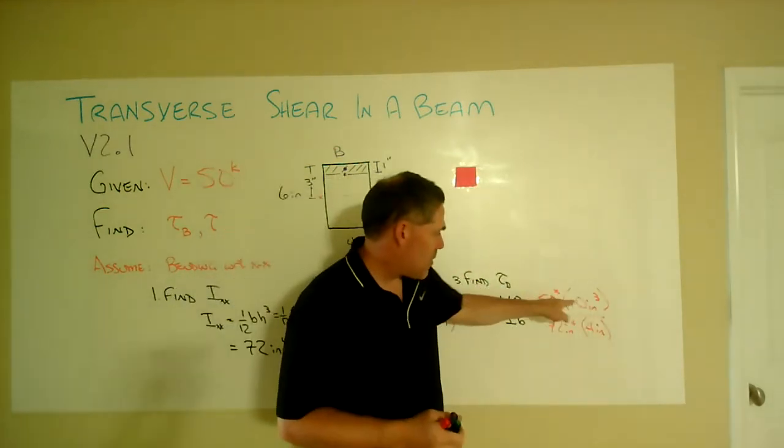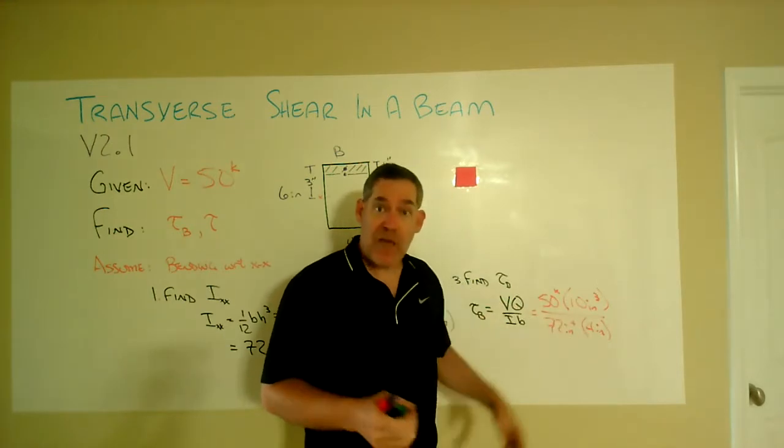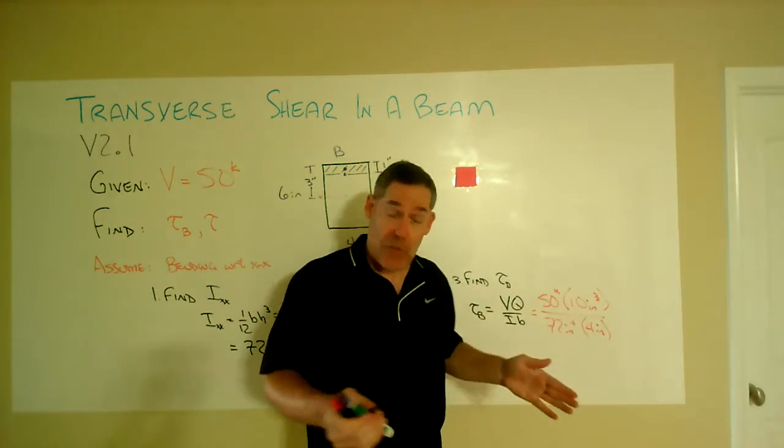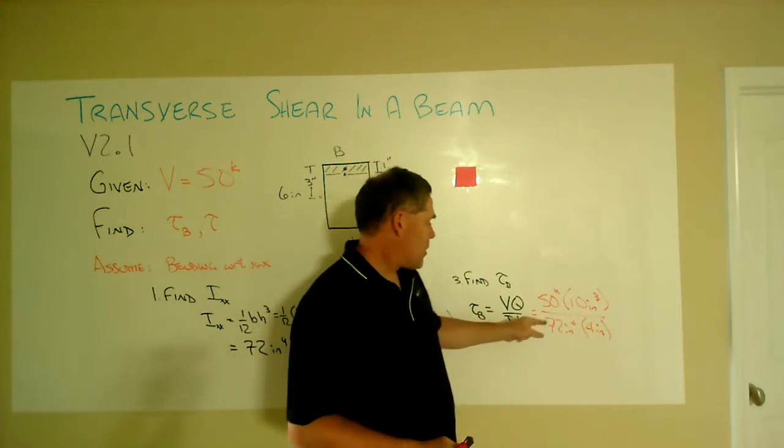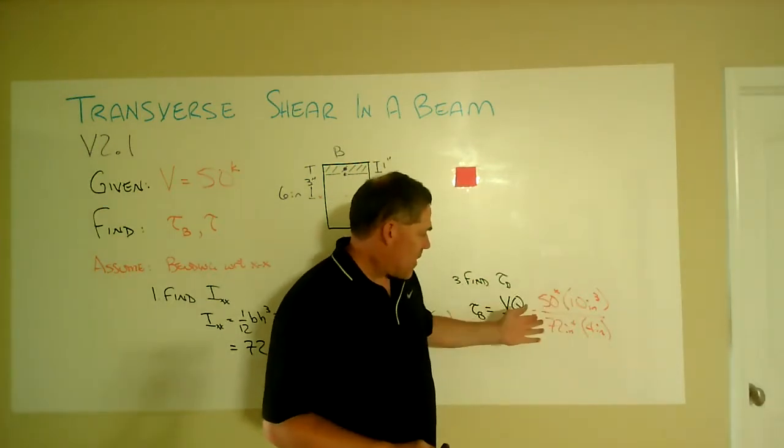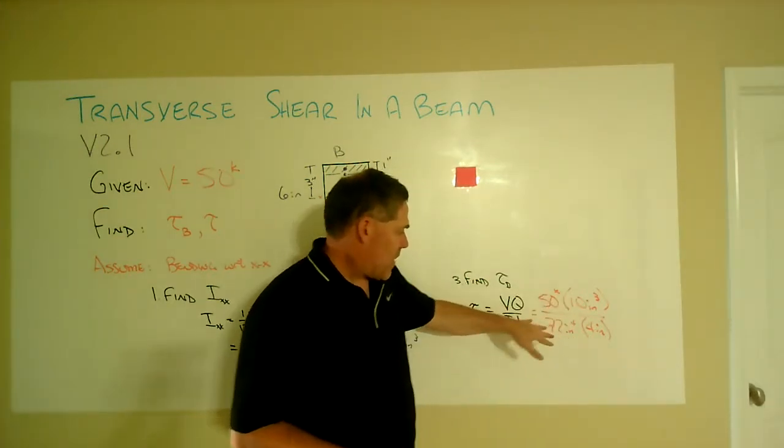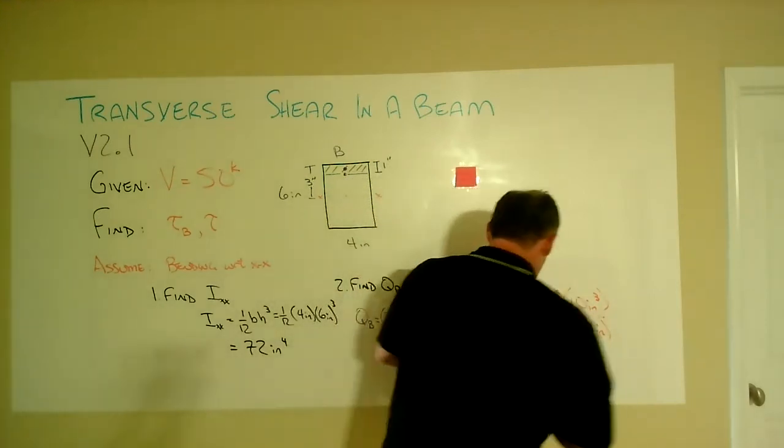And let's check out the units. In the numerator, we have kip inches cubed over inches to the fifth. That would be kips per square inch. That's stress. That's good. We've done something good there. 50 times 10 is 500 divided by the four divided by the 72 will give us, when you put it into your calculator,